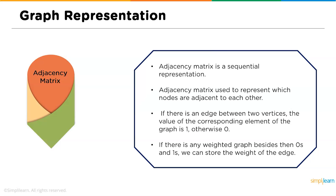If there is a weighted graph, instead of zeros and ones we store the weight of the edge as that particular number. For example, if there is a connection between A and B with a weight of five, we represent it as five, not as one. If there is no weight, we represent it as one, and if there is no connection, we represent it as zero.